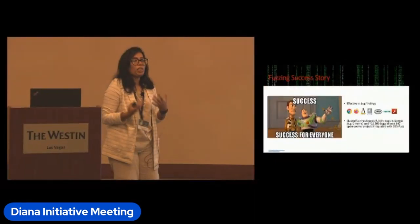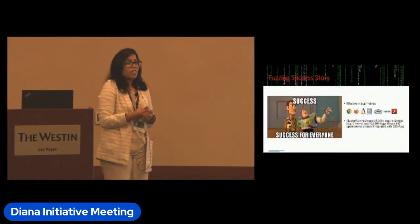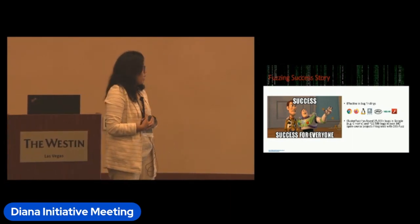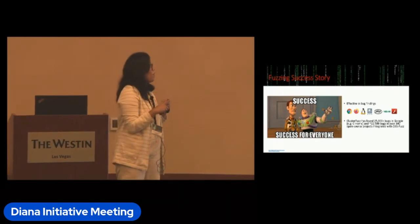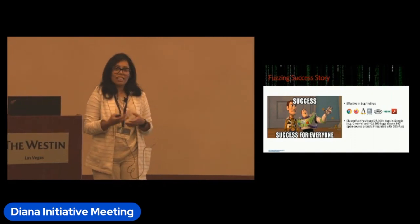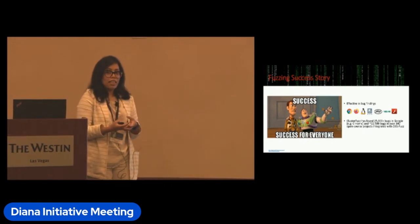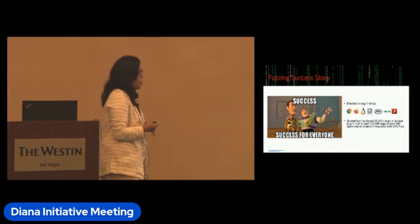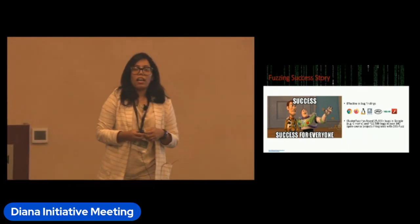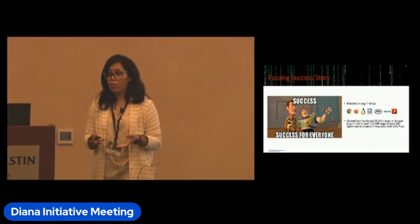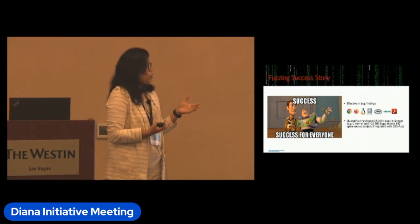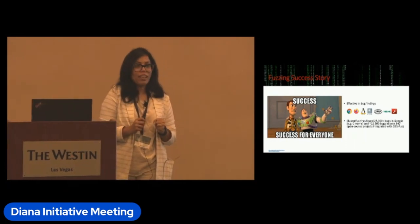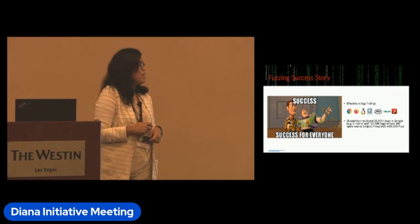Now the fuzzing success story — why should you consider fuzzing your codebase? It's very effective in bug hunting. If you look at today's CVE list, many CVEs come from fuzzing codebases. Applications like Google Chrome, Firefox, Linux, JPEG, Nginx, and Adobe Flash Player — people found bugs in all of them using fuzzing techniques. ClusterFuzz, a fuzzing platform from Google, found over 25,000 bugs in Google Chrome and 22,000 bugs in over 340 open source projects. So we can safely say fuzzing is very successful in finding bugs.